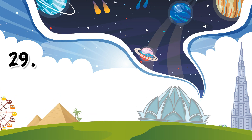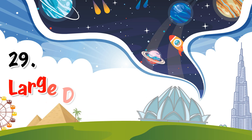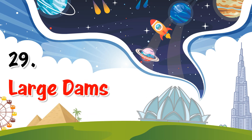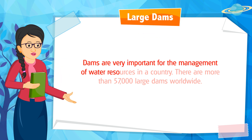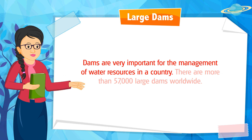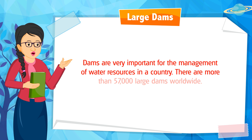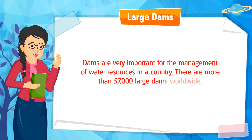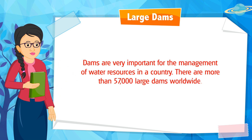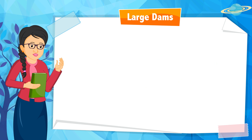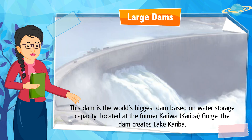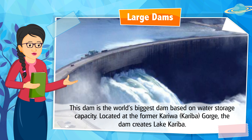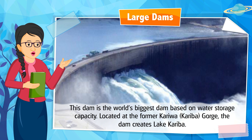Chapter 29: Large Dams. Dams are very important for the management of water resources in a country. There are more than 57,000 large dams worldwide. Let us identify the names of the dams.